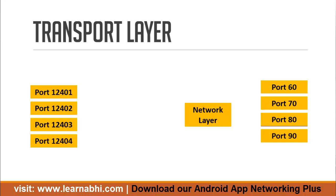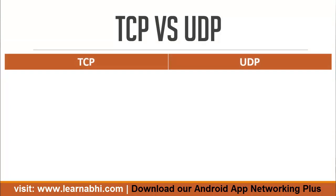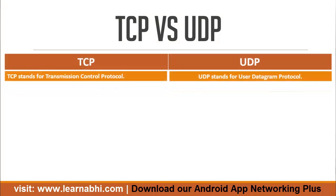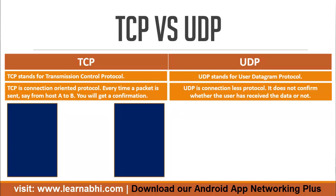This is how data travels in a network. TCP and UDP are two different transport layer protocols. Here are the features and differences between TCP and UDP. TCP stands for Transmission Control Protocol; on the other hand, UDP stands for User Datagram Protocol.